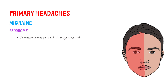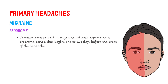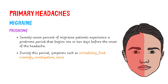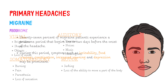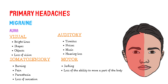77% of migraine patients experience a prodrome period that begins one or two days before the onset of the headache. During this period, symptoms such as irritability, food cravings, constipation, increased yawning, and depression may be prominent. About one in four people with migraine experience one or more focal neurological symptoms in the second stage, called migraine aura. These symptoms may precede or accompany the headache.